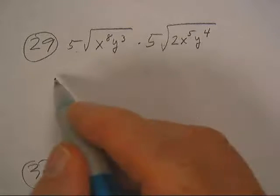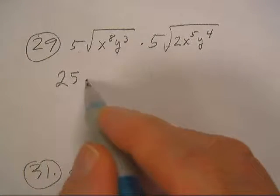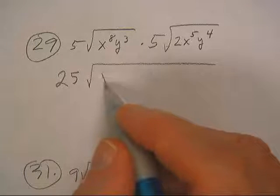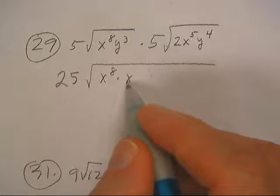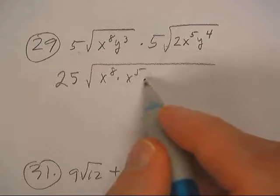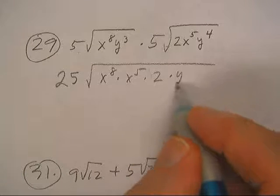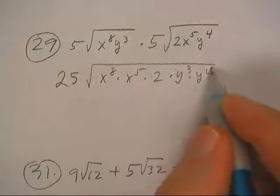Okay, 5 times 5 is 25, and then I can throw all of these, the 2 of course, the y cubed and the y to the 4.